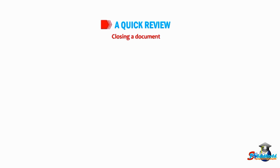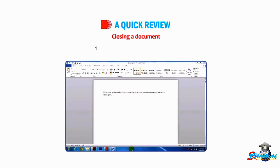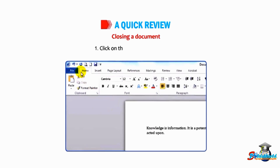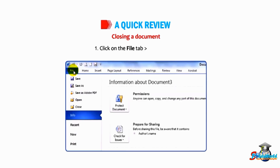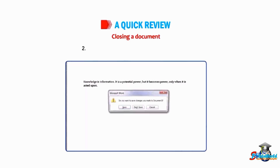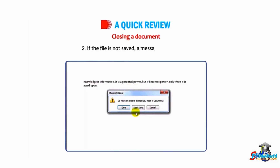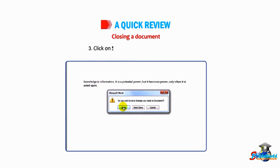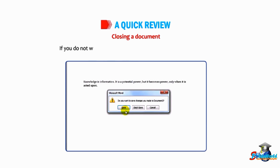Let me explain how to close a document. Number one: click on the File tab, then go to the Close option. Number two: if the file is not saved, a message box appears. Number three: click on Save if you want to save the file. If you do not want to save the changes, select the Don't Save option.